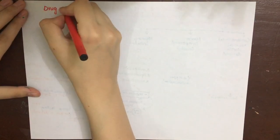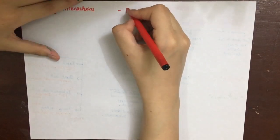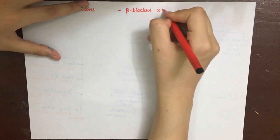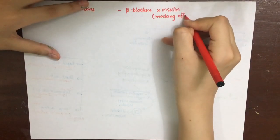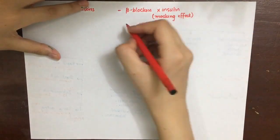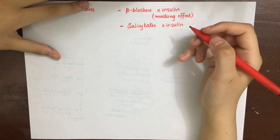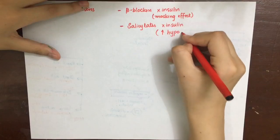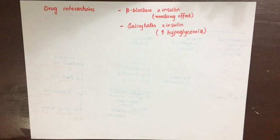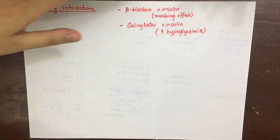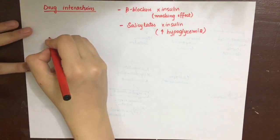Two important drug interactions with insulin are notable. First is its interaction with beta blockers — if a patient goes into hypoglycemia, the sympathetic response of tachycardia and palpitations will be masked by beta blockers, so we will not know if the patient has gone into hypoglycemia, which is very dangerous. Second, salicylates will augment the hypoglycemic effect by increasing beta cell sensitivity to glucose and also increasing insulin secretion.